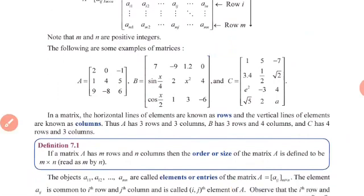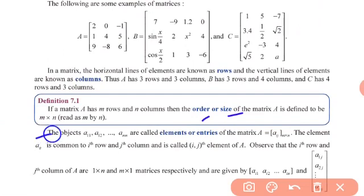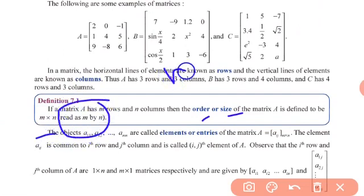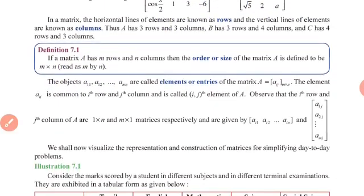The size of a matrix with m rows and n columns — the order, size, or dimension of the matrix is denoted by m by n, read as 'm by n', which means m into n.